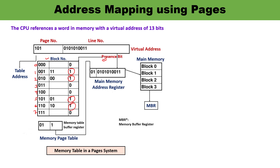How is the mapping done? Looking at the block number — for example, block number shown as binary 0 0 0 1 1 that is block number 3 — page number 0 is mapped to block number 3. Similarly, page number 2 is mapped to block number 0. This is how you can understand the mapping from page numbers to block numbers in the memory page table.